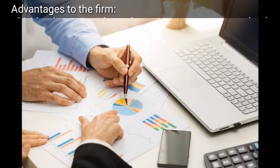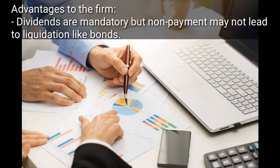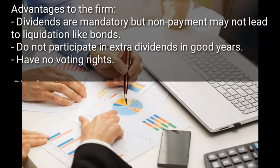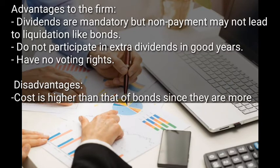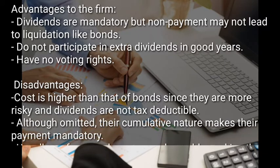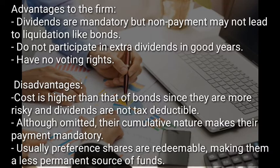Advantages of preference shares to the firm: dividends are mandatory, but non-payment may lead to liquidation. Like bonds, preference shareholders do not participate in extra dividends in good years because their dividend payment is fixed. Whether the company has made profits or not, they are supposed to be paid dividends. Therefore in good years where the company has made much profit, they do not participate. They also have no voting rights.